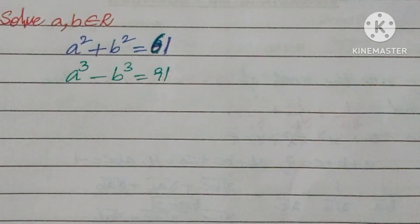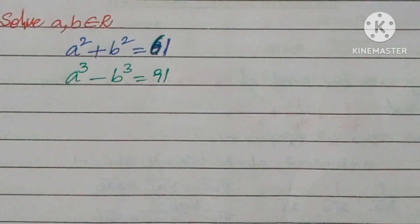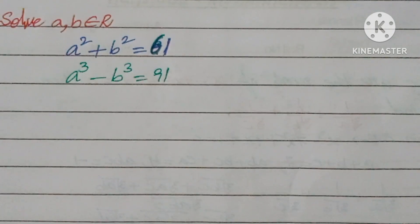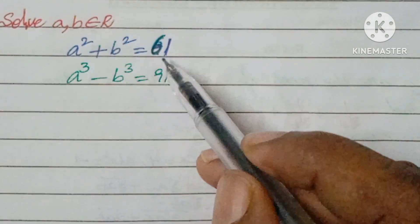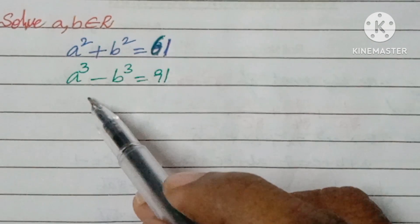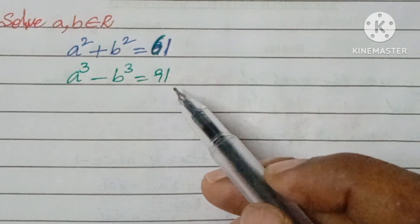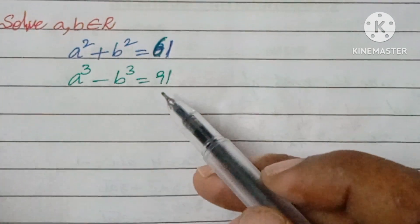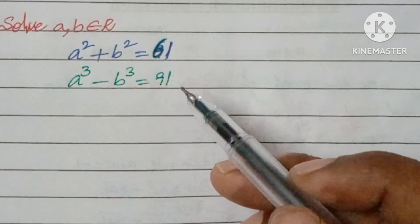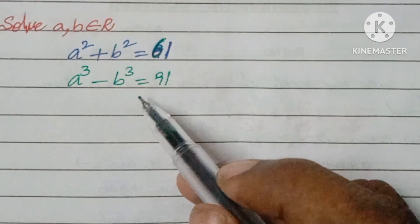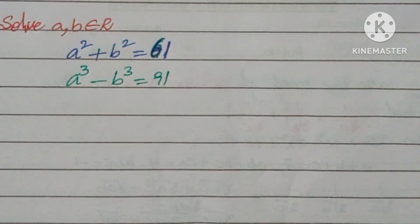Hello, welcome back to ANCG Max. Today we are looking at one logical question — a nice system of equations. The question is: given a² + b² = 61 and a³ - b³ = 91, you have to find the values of a and b, where a and b belong to real numbers. Pause the video for 10 seconds and try it yourself.